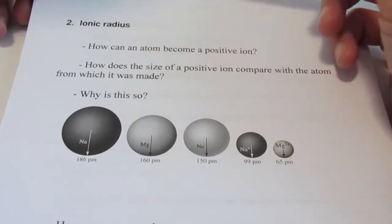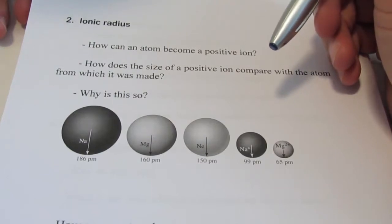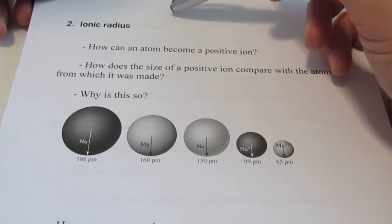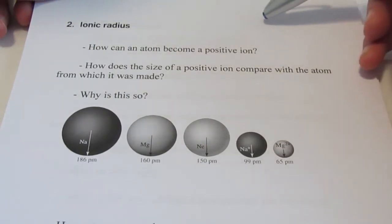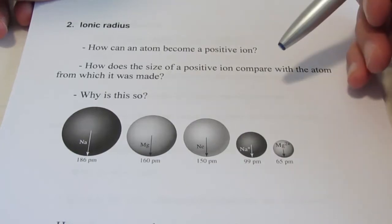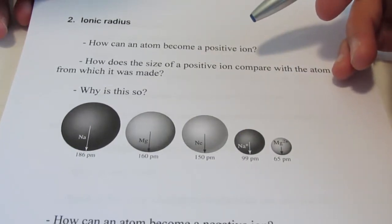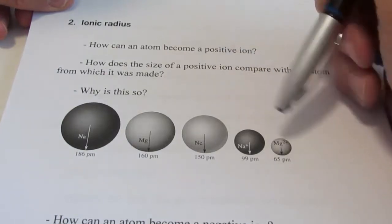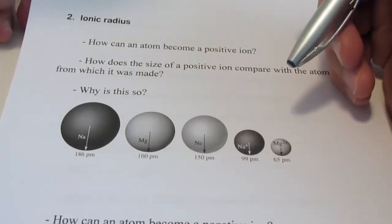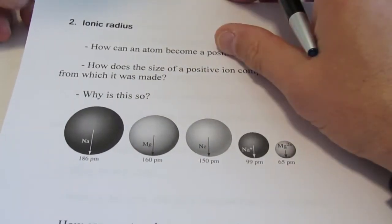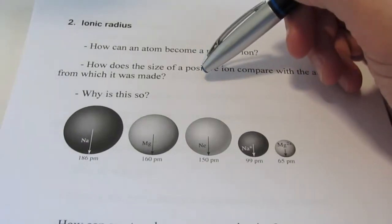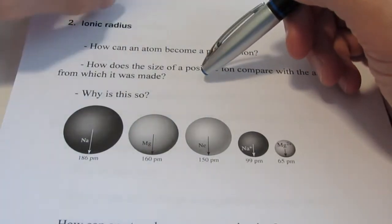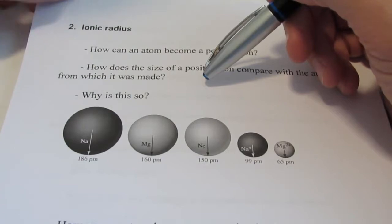We're talking about some more periodic properties. We talked about atomic radius — as you go across a period, atoms get smaller due to increasing effective nuclear charge, which means you're gaining protons without gaining additional energy levels. When you go down a group, atoms get larger due to gaining energy levels, and we talked about the shielding effect.